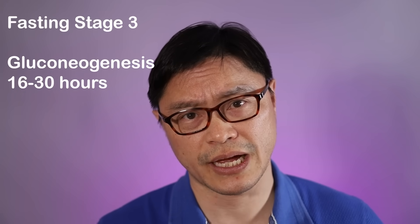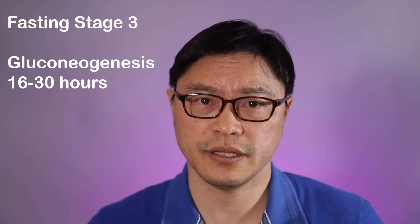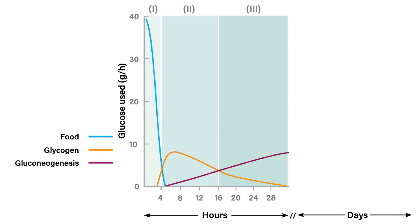In stage three, Dr. Cahill called this gluconeogenesis, lasting from about 16 to 30 hours. At this stage, the glycogen in the liver is starting to run out, and we haven't completely switched to fat metabolism yet. So the body generates glucose from protein — that's what gluconeogenesis means: the production of new glucose predominantly from protein. This sounds pretty bad, but that's not quite true.